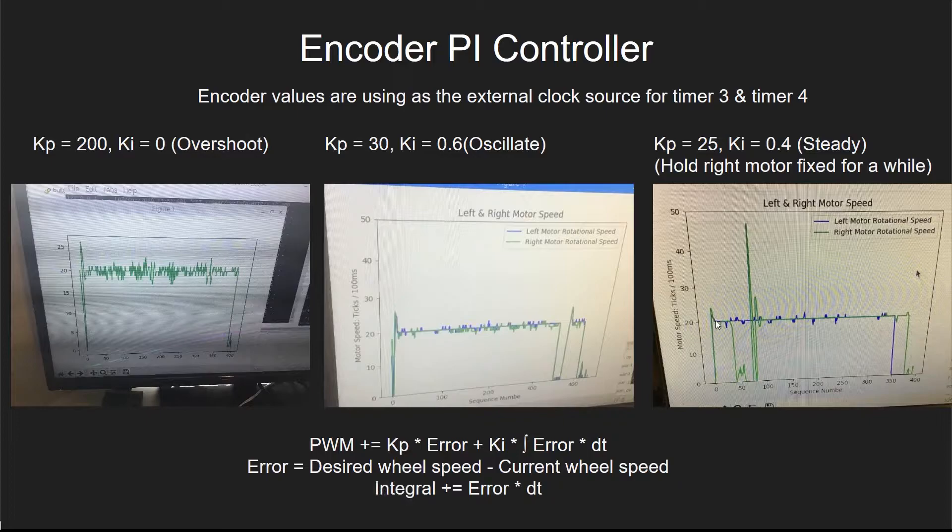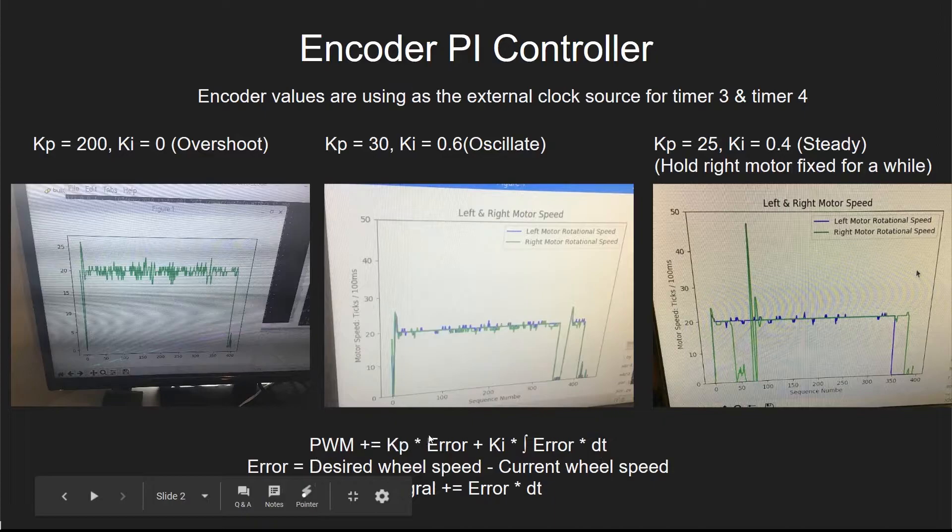At this point, if I hold my right motor fixed for a while, the current wheel speed of the right motor will be set to 0, and the error will be set to a large value because the current wheel speed is 0. If I pass the error into the formula above, the value of the PWM signal will actually be increasing. That's the reason why we can find this drastic increase in the third image. Now, in order to better demonstrate the performance of the PI controller, I prepared a video for you. In the video, the rover is placed at the edge of the table. It will move 100cm forward with a constant speed of 20 ticks per 100ms.